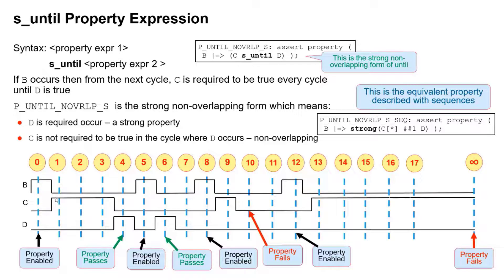Here B occurs and C is true from the next cycle until the cycle before D occurs — once D occurs, it doesn't matter what C is, so the property passes. B occurs and the very next cycle we get D — there's no obligation for C to occur, therefore that passes. Here B occurs, next cycle C is true, but the cycle after it's not, and D is not true — therefore that's a failure at cycle 10. Here C stays true to infinity and D never occurs — that's a failure because it's a strong property.